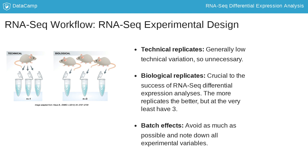Finally, avoid confounding your experiment with major sources of variation. For example, if your animals are of different sexes, don't have all male mice as control and all female mice as treatment, as you won't be able to differentiate the treatment effect from the effect of sex.